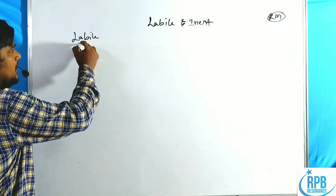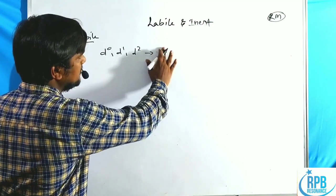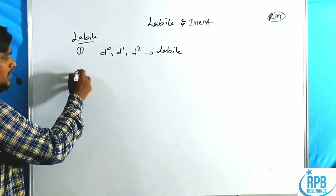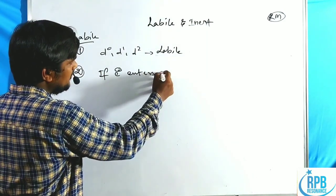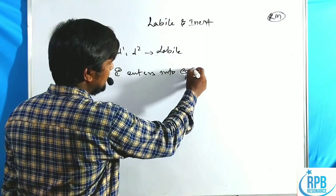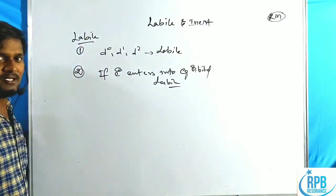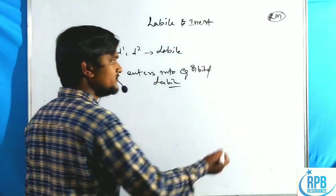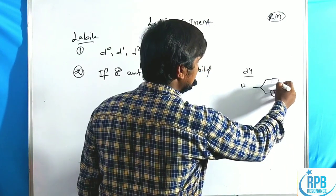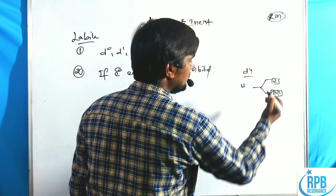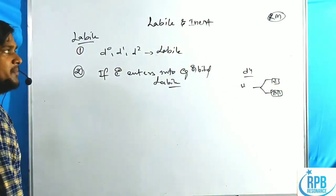The first two points are regarding labile complexes. First point: D0, D1, D2 configurations are labile. Second point: if an electron enters into the Eg orbital, then it is labile. So if an electron enters into the Eg orbital — that means D4 configuration high spin — according to crystal field theory, the fourth electron enters into the Eg orbital. Whenever an electron is present in the Eg orbital, then it is a labile complex.